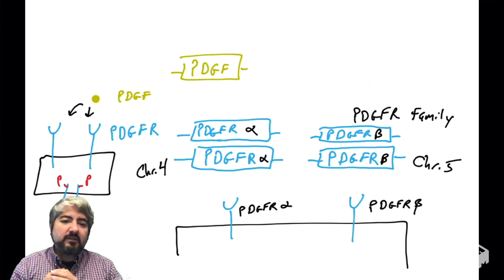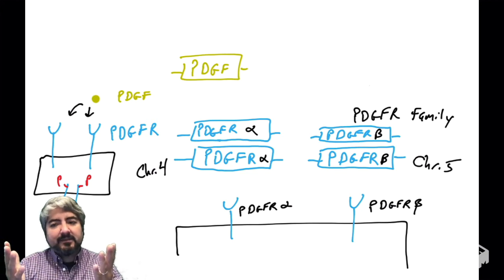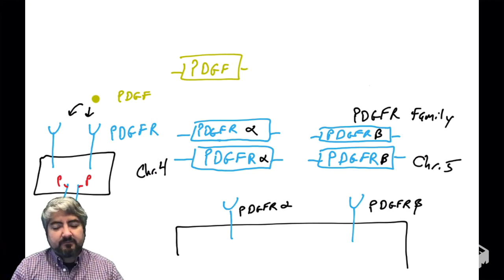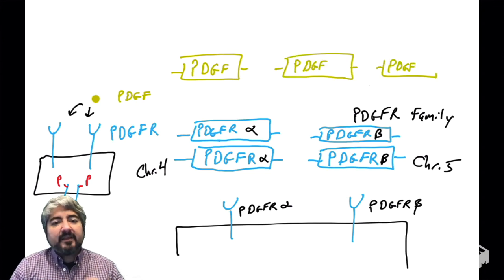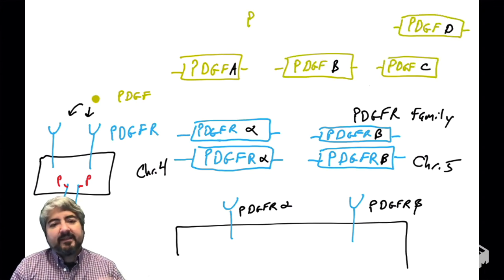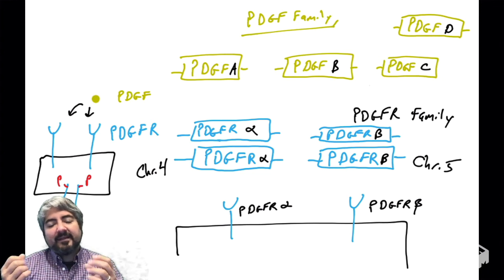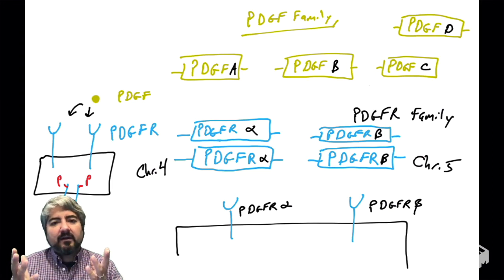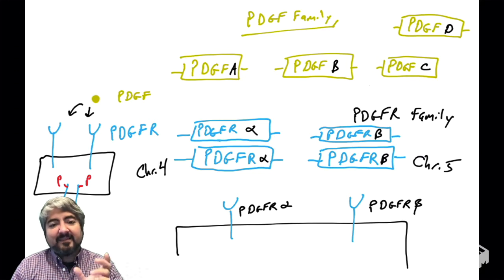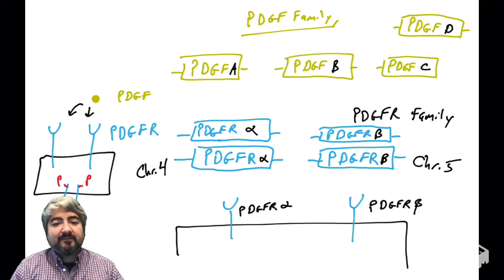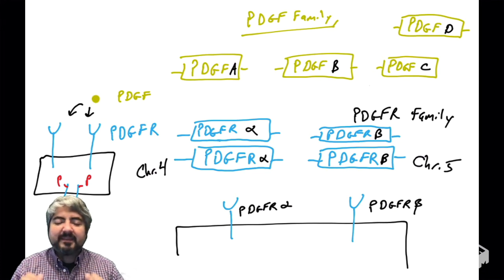In previous videos, when I talked about just the PDGFR receptor, I wasn't telling you that there are different versions from different gene families. The same thing goes with the growth factor itself. I said there is a growth factor called PDGF stored in platelets and released upon tissue damage. It turns out there are four different versions of PDGF — A, B, C, and D. These are whole separate genes that duplicated over the course of animal evolution, and they all act as growth factors, similar but not identical.